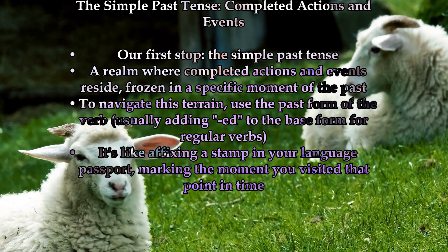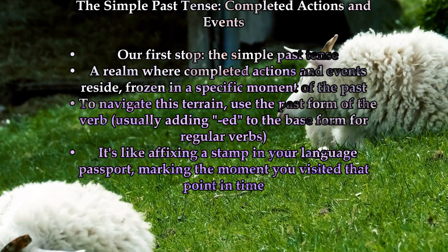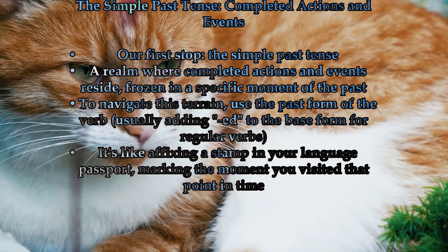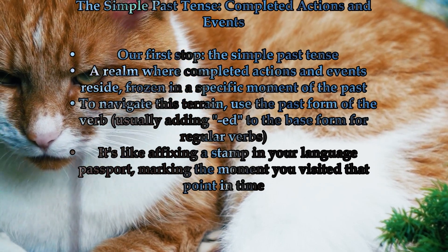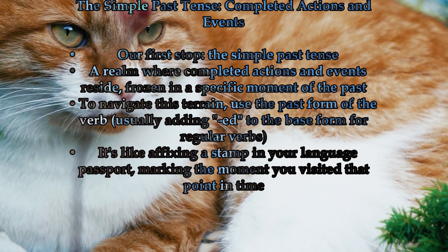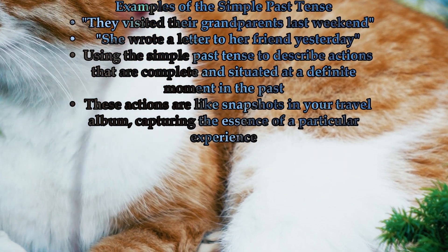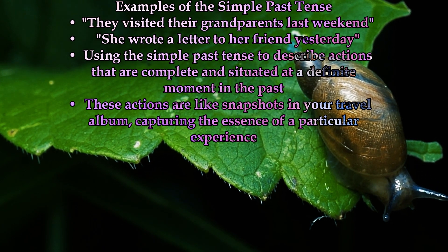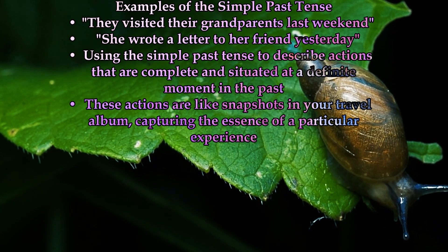Our first stop on this journey through time is the simple past tense, a realm where completed actions and events reside, forever frozen in a specific moment of the past. To navigate this terrain, we use the past form of the verb, which for regular verbs usually means adding 'ed' to the base form. For example, when we say 'they visited their grandparents last weekend,' or 'she wrote a letter to her friend yesterday,' we're using the simple past tense to describe actions that are complete and situated at a definite moment in the past.